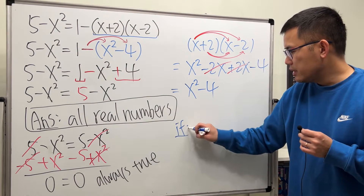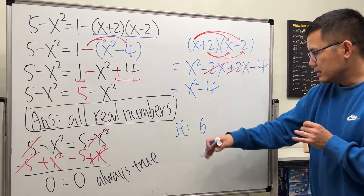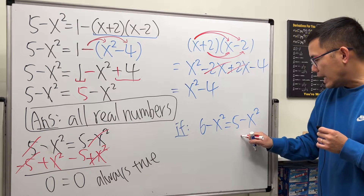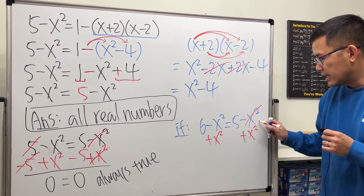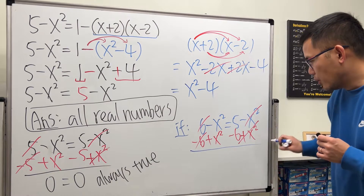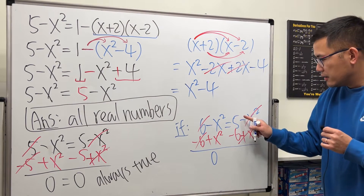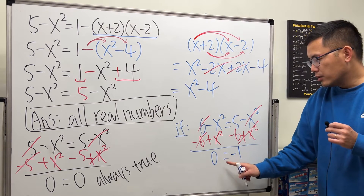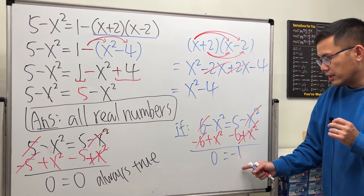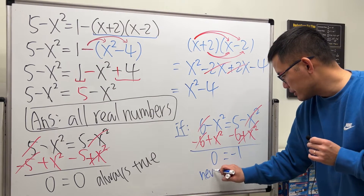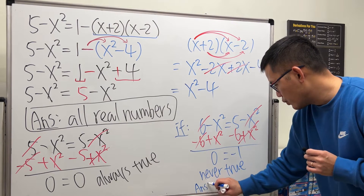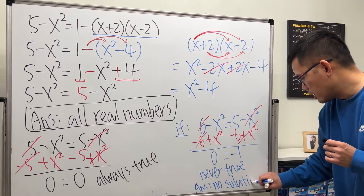However, if we had instead ended up with 6 minus x squared equals 5 minus x squared, adding x squared to both sides cancels those terms. Then subtracting 6 from both sides gives 0 equals negative 1. This is never true — it's a contradiction. So that equation would have no solution at all.